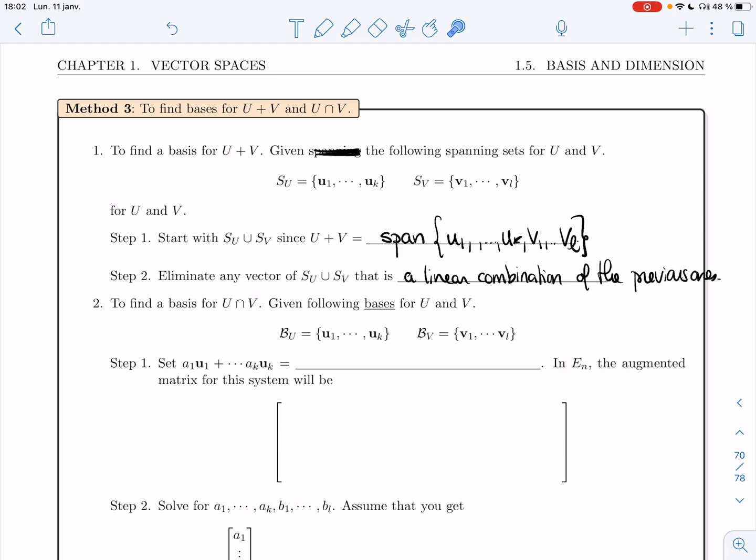All right, to find a basis for the intersection, that's a tiny bit more complicated. Here you do have to start with bases; otherwise you're not guaranteed that what you'll get in the end will be linearly independent. It will always span, but if you have redundancies here, you'll end up with redundancies possibly in the intersection basis.